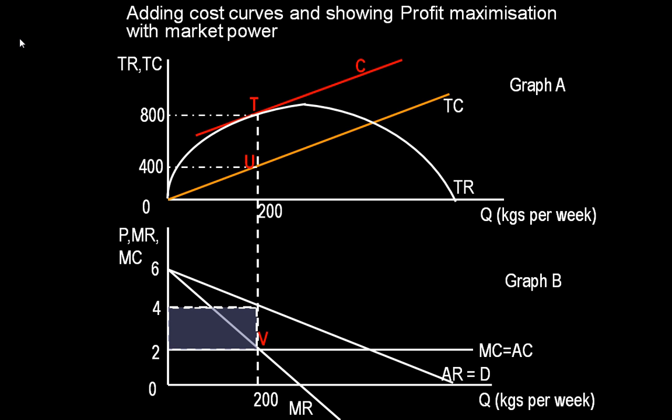Further, at a quantity of 200 kilograms bought and sold, the average cost, or cost per unit, is two pounds, while the price per unit is four pounds. Total abnormal profit is 400 pounds, and this is shown by the blue shaded area.